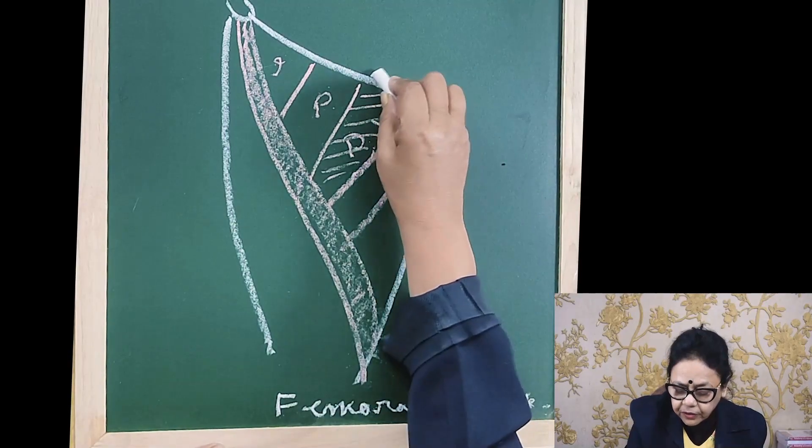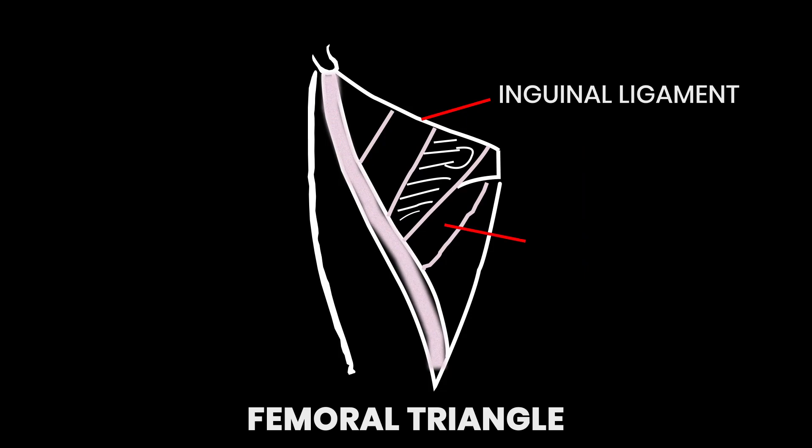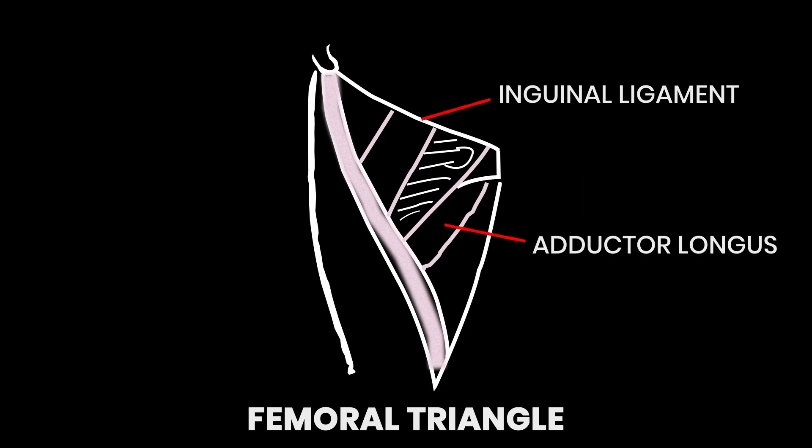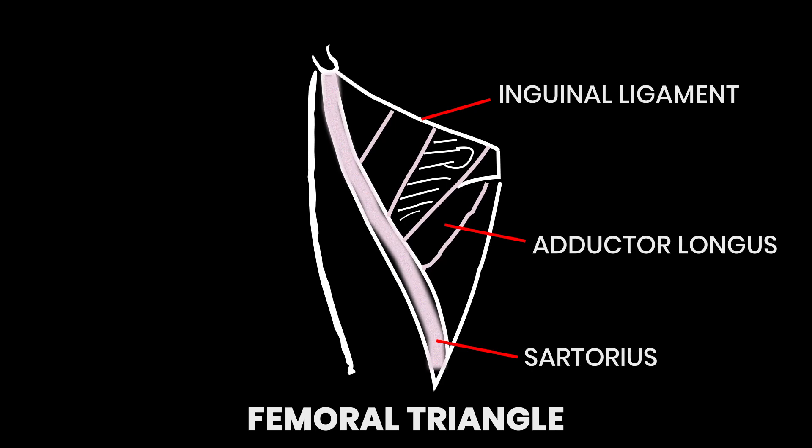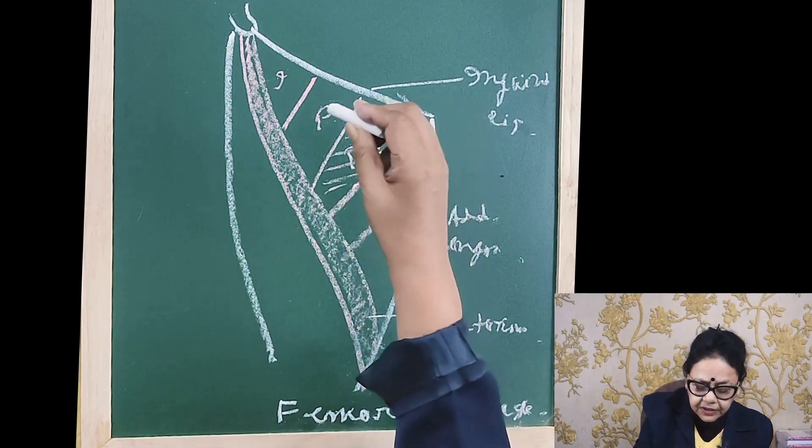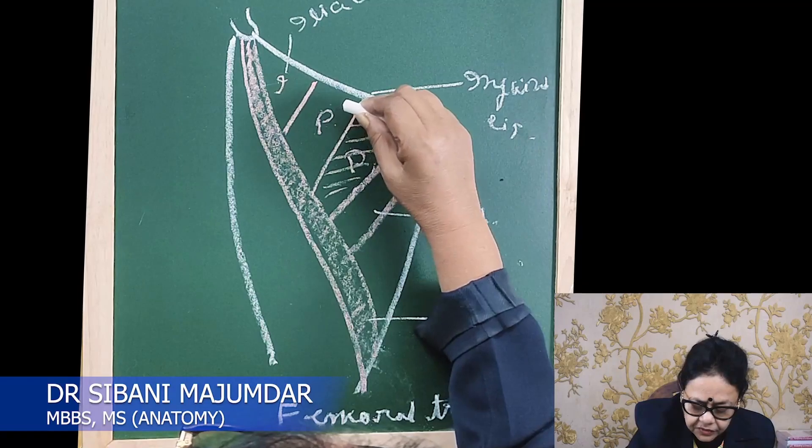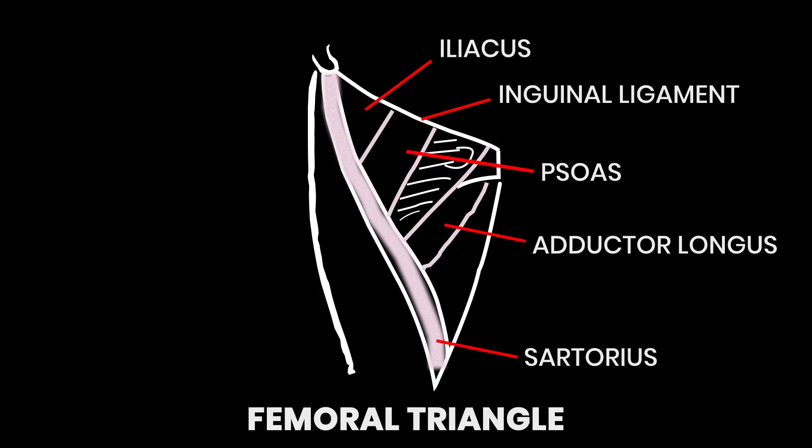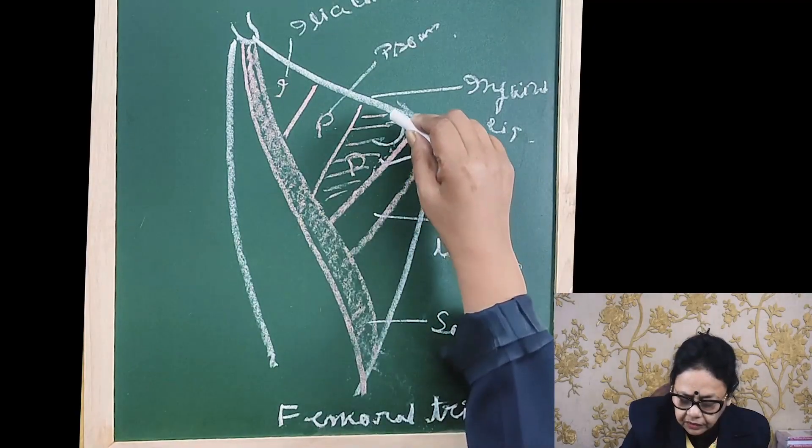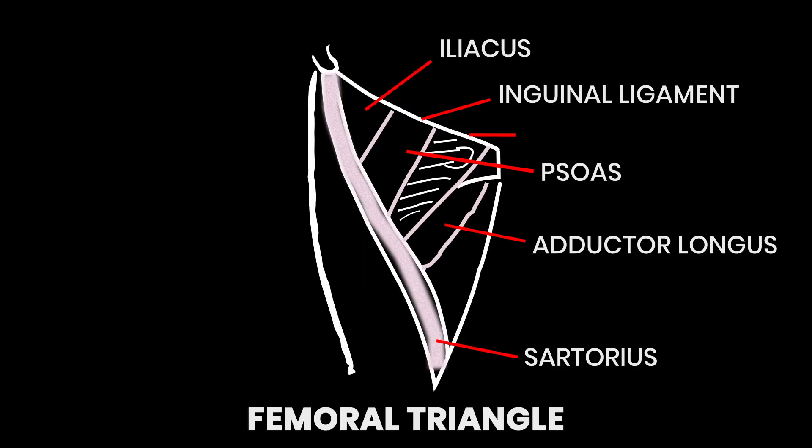This is the inguinal ligament. This is the adductor longus, this is the sartorius and this is the iliacus and this is the psoas. This checked one is the pectineus.